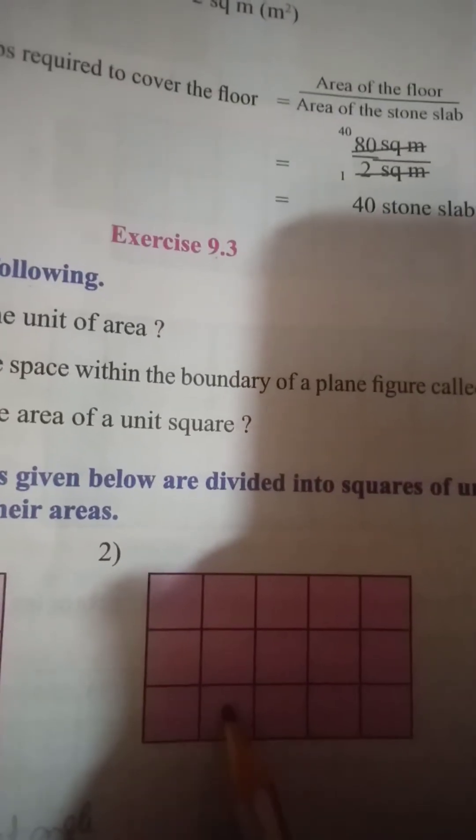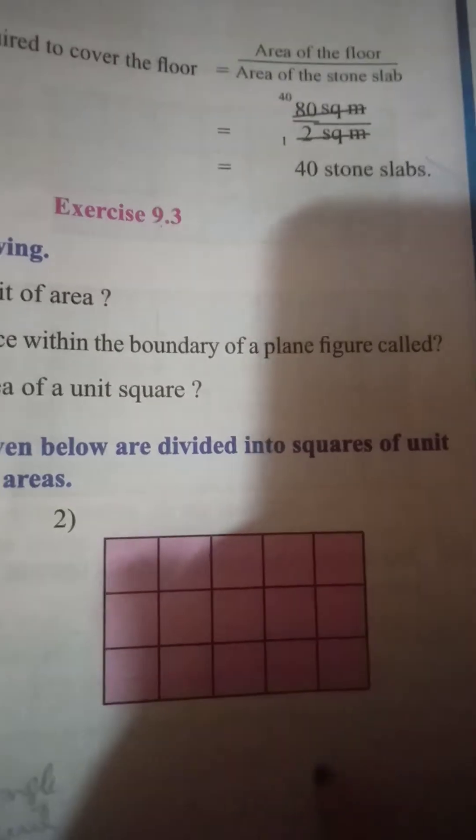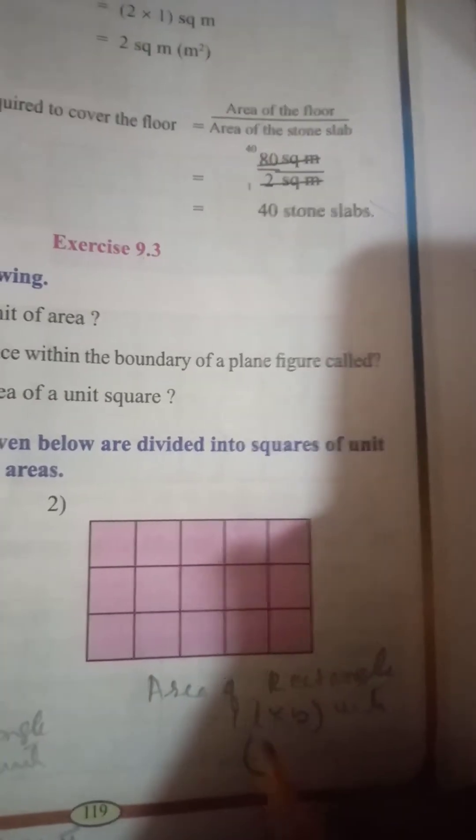Second question: The total length is 5 units and breadth is 3 units. Area of rectangle equals length into breadth. Five threes are 15 — so the area is 15 square units.